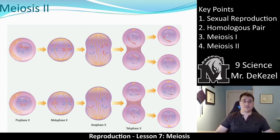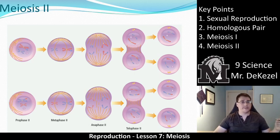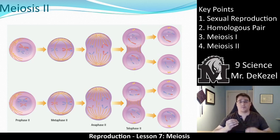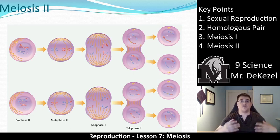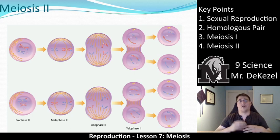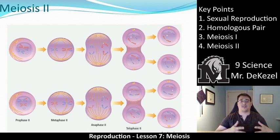In meiosis 2, both cells go through the same process simultaneously. In prophase 2, the chromosomes condense again. In metaphase 2, the pairs line up in the middle along the equator and are prepared to be split. In anaphase 2, the chromosomes are actually torn apart — just like in mitosis. In telophase 2, the nuclear envelope forms, and cytokinesis creates four different and unique daughter cells. Those are gametes — they might be eggs or they might be sperm.